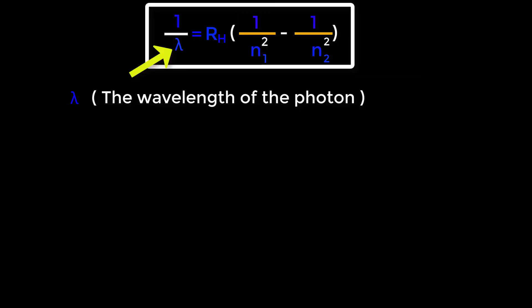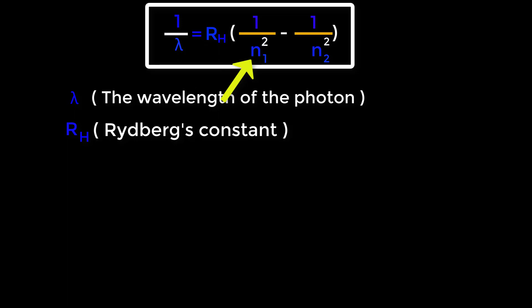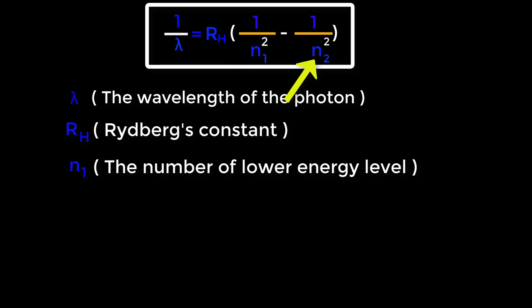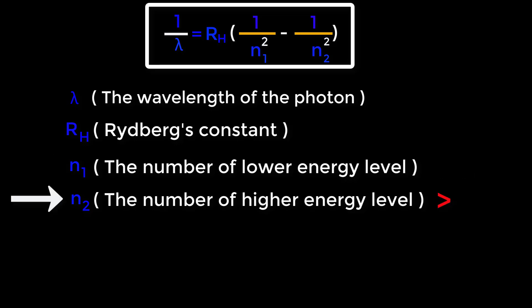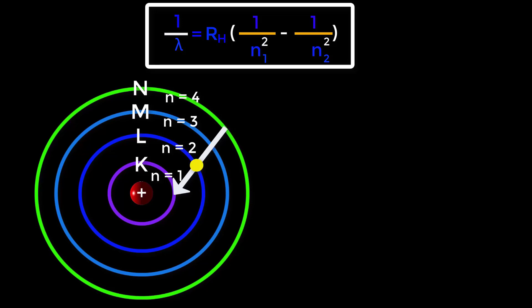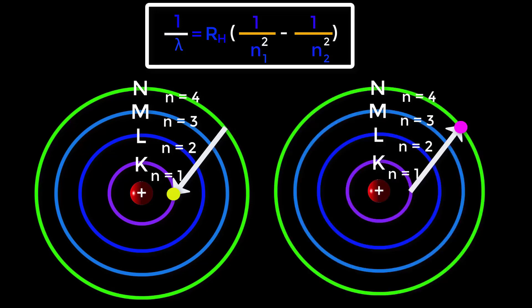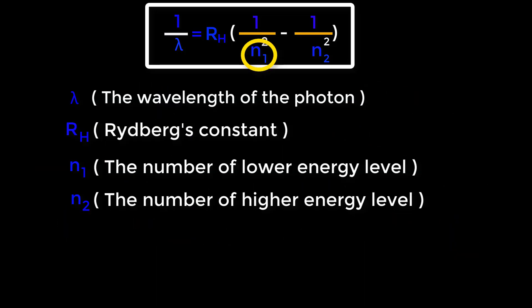Lambda represents the wavelength of the photon. RH represents Rydberg's constant. N1 represents the number of the lower energy level and N2 represents the number of the higher energy level. Many students get confused about the values of N1 and N2 — whether N1 should be greater or smaller. Always remember that the value of N1 must be smaller than the value of N2.